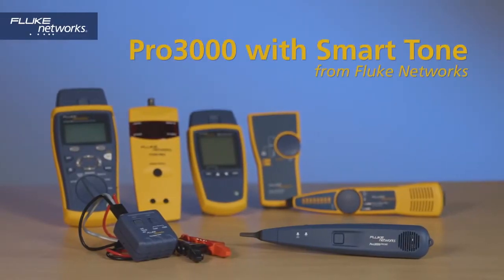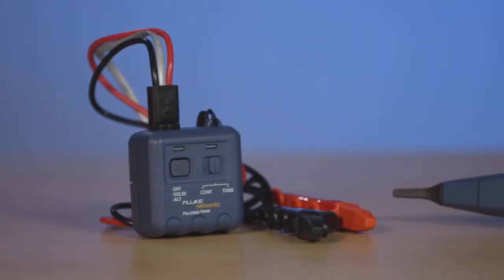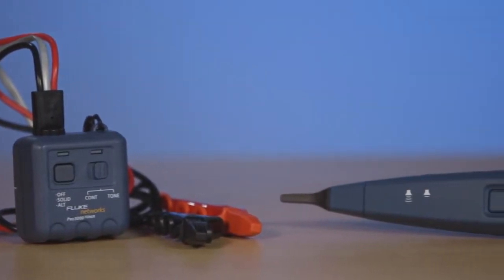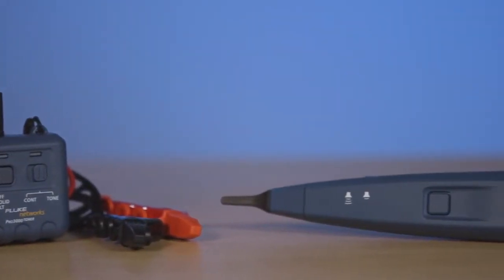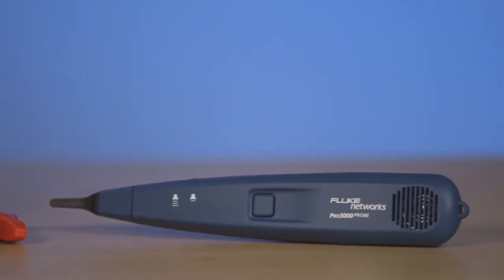Fluke Network's Pro 3000 Toner and Probe features SmartTone technology, which allows you to identify individual wire pairs even when in close proximity to other wires. Using SmartTone with the Pro 3000, tone and probe can be done in three simple steps.